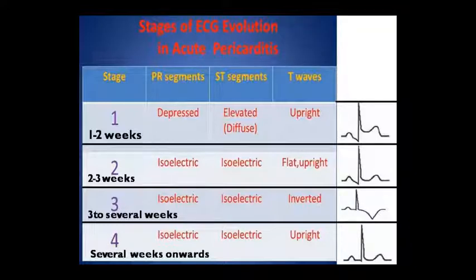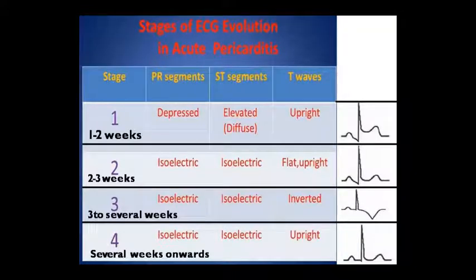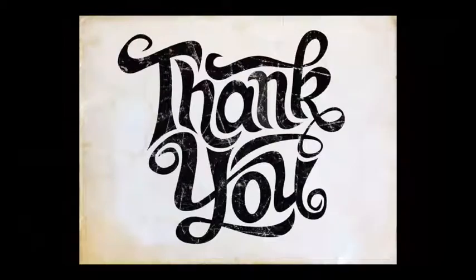On ECG, in the first stage the PR segment and ST segment are iso-electric and the T-wave is flat or upright. In the third stage, after several weeks, the condition can be iso-electric and the T-wave can be inverted. In the fourth stage, several weeks onward, both conditions are iso-electric but the T-wave can be upright again. That completes the topic of pericardial effusion.